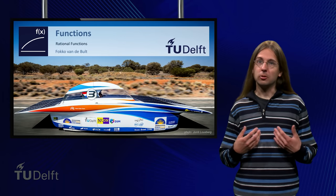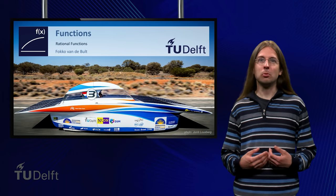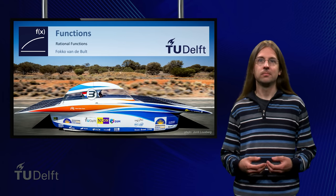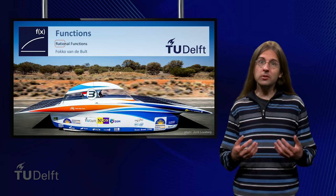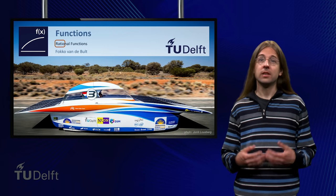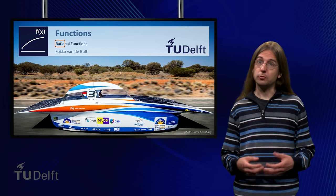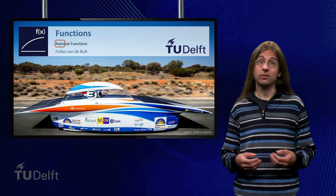Hello. The quotient of two quantities is called their ratio. A rational function is the quotient or ratio of two polynomials.